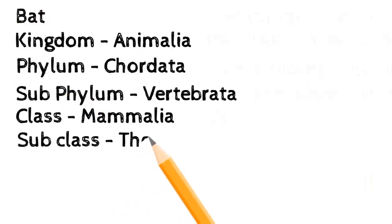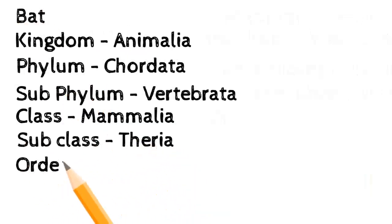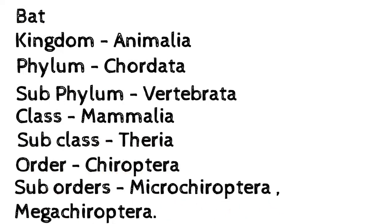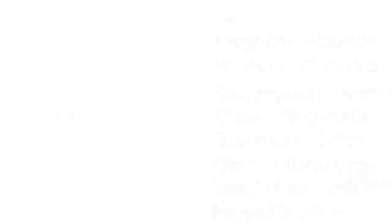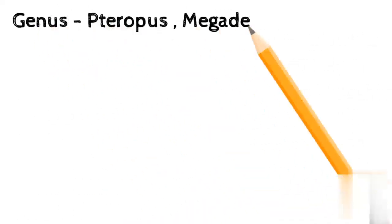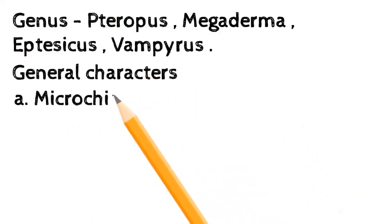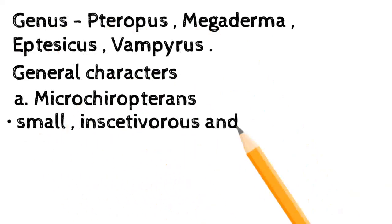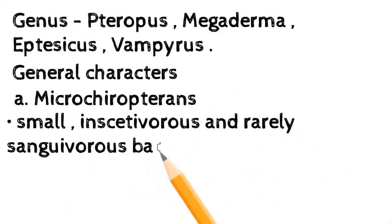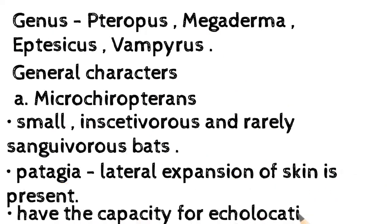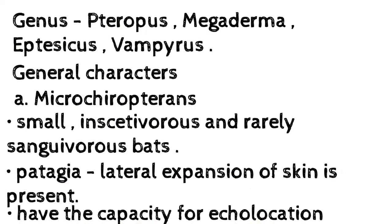Bat — Kingdom: Animalia; Phylum: Chordata; Sub-phylum: Vertebrata; Class: Mammalia; Sub-class: Theria; Order: Chiroptera; Sub-orders: Microchiroptera and Megachiroptera; Genera: Pteropus, Megaderma, Eptesicus, Vampiris. Microchiropterans are small insectivorous and rarely sanguivorous bats. Patagia — lateral expansion of skin — is present. They have the capacity for echolocation, which helps in locating prey and avoiding obstacles during flight.